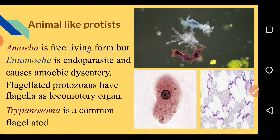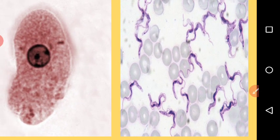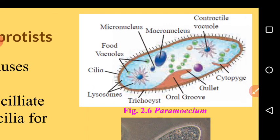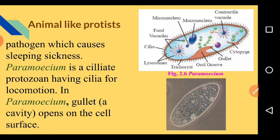Flagellated protozoans have flagella as a locomotory organ. Trypanosoma is a common flagellated protozoan — it is a pathogen that causes sleeping sickness in human beings. Then there is Paramecium, a ciliated protozoan that uses cilia for locomotion. On the surface of this organism there are small hair-like structures called cilia.